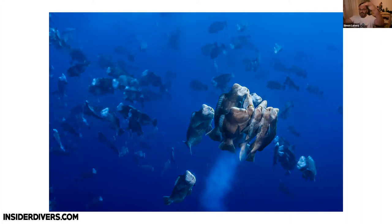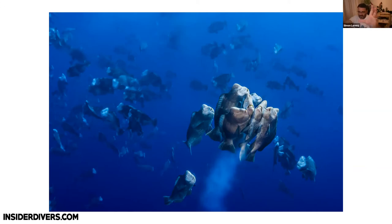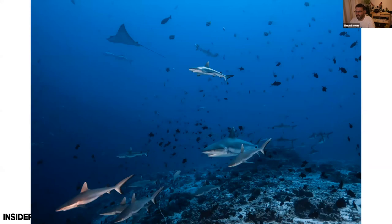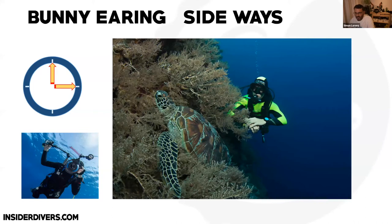Bunny ears are also useful for situations like a parrotfish spawn — when you want your light to travel, putting strobes up allows you to minimize backscatter and actually create more light on the subject. These animals are not that close, so when I shoot these spawns I generally put my strobes a bit higher and sometimes take the diffuser caps off to get a lot of forward beam. By putting them up I avoid getting backscatter between me and the animals. Here are sharks that are pretty far away and still get some light because the strobes are slightly elevated.